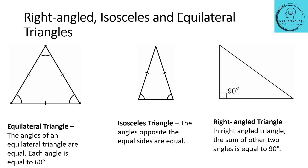Let's look at the equilateral triangle. We have already learnt that an equilateral triangle has all sides of equal length and all angles are equal — all three angles will be equal to 60 degrees each. Those are the properties of an equilateral triangle.